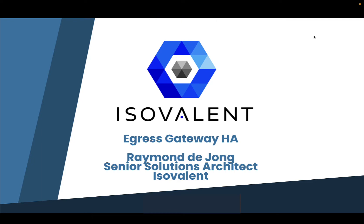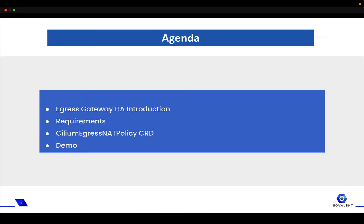Hello everyone and welcome to this demo of the Egress Gateway HA feature, which is available in Cilium Enterprise. My name is Raymond de Jong, I'm a Senior Solutions Architect at Isovalent. In this demo we'll start with an introduction of the Egress Gateway HA feature, after which we'll talk about the requirements and the actual setup of the Cilium Egress Net Policy CRD. After which we'll jump into a demo environment we've prepared on AWS, which has a specific implementation of the Egress Gateway HA solution, and we'll explain why and how we've configured it, just as an example implementation.